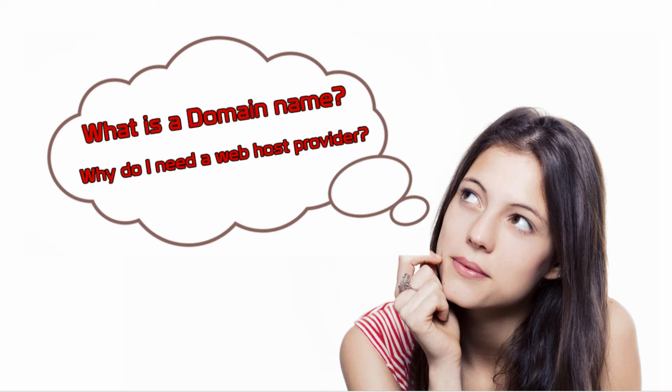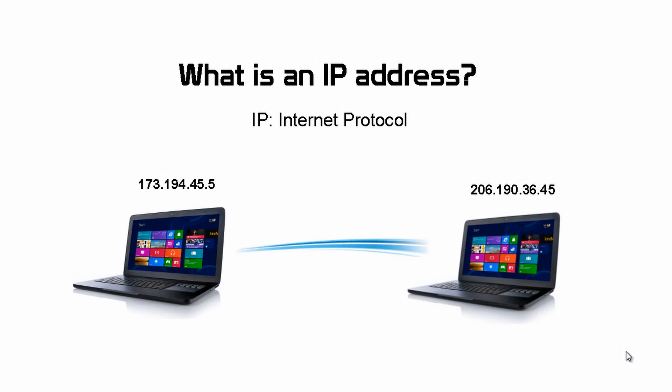But for you to understand this, first we need to talk about something else: what is an IP address? You've probably heard about this, but what exactly is it? Well, IP stands for Internet Protocol. Every single computer that is connected to the internet — a laptop, a cell phone, a desktop computer, or even a printer — has a unique IP address. This is how computers connected to the internet can identify each other. Here you can see an example of an IP address for this laptop, which is 173.194.45.5. And this other laptop has another IP address.